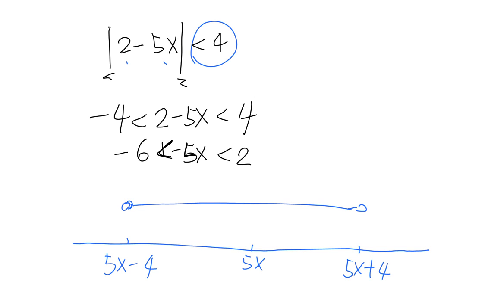And now we divide it by negative 5 on each side. And again, don't forget to change your sign because this is a negative number.